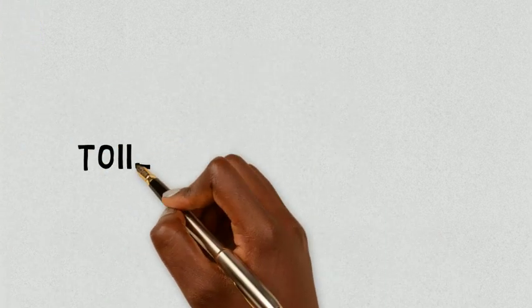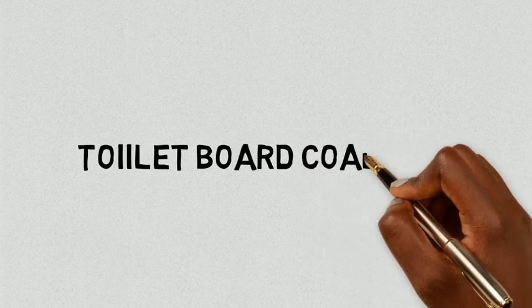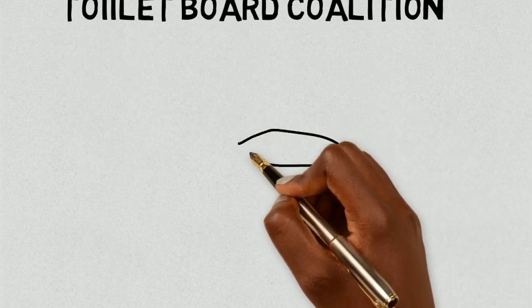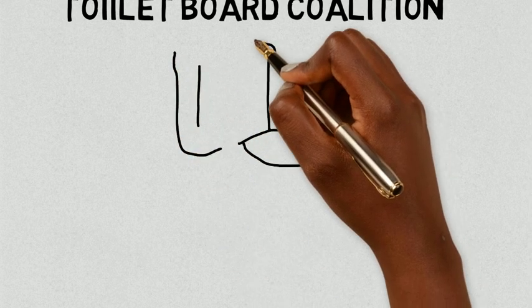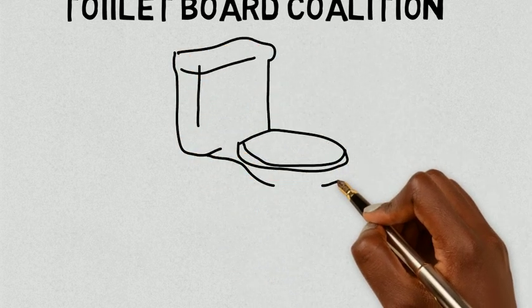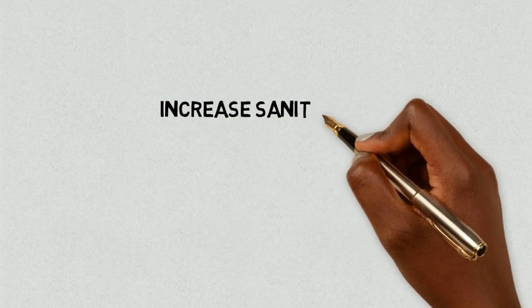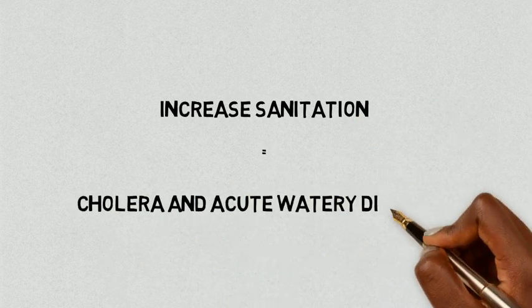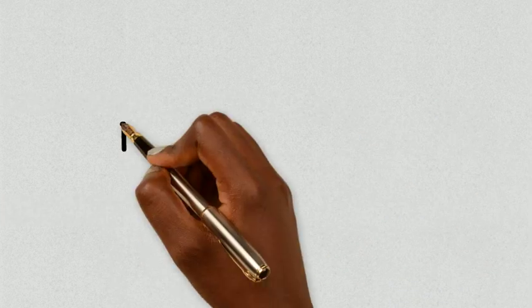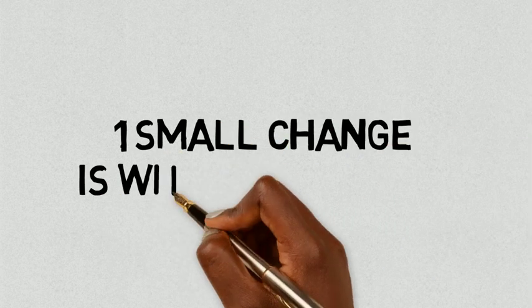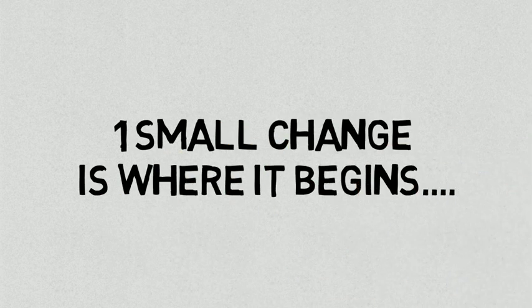One initiative that could be supported for the Somalis would be to introduce the Toilet Board Coalition. This organization's goal is to increase access to sanitation in areas of low income and develop partnerships with the people in that area. If this program was to be implemented in Somalia, it could empower the people to help increase their sanitation, thereby decreasing the rates of cholera and acute watery diarrhea. Although the challenges Somalia faces may seem insurmountable, one small change is where it begins.